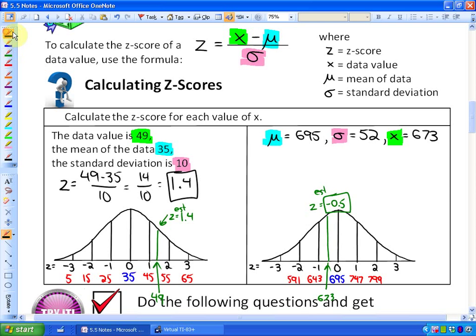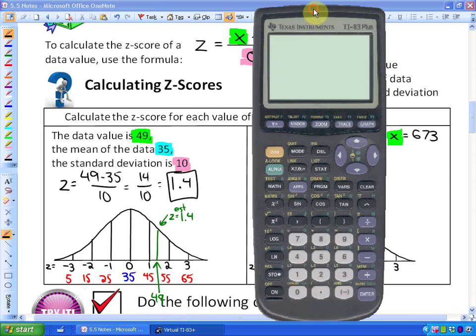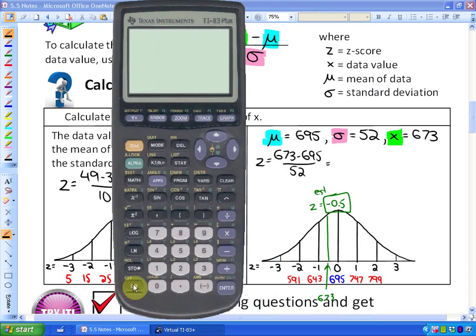So here's the calculated value. The z-score is equivalent to the data value, 673, minus the mean, 695, over the standard deviation, 52. So the calculated numerator, I'll do this on my calculator as well, just to show you for those who are scared of doing some of this stuff in your head.